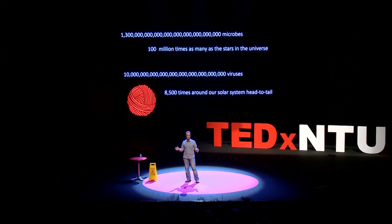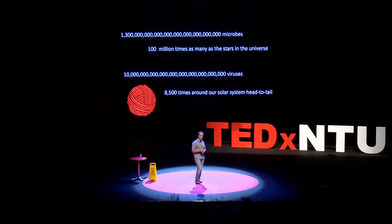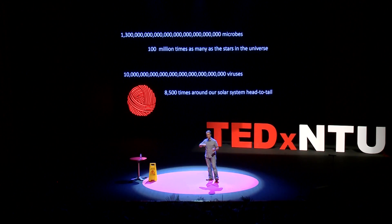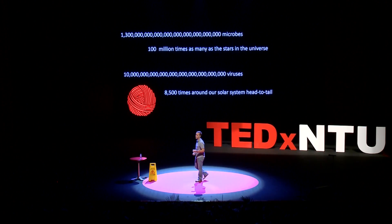And the smaller dots you saw in the picture before — those are viruses. There are about 10 to 100 times that number. And despite the fact that they're extremely small, if we were to string them head to tail into a tiny little string, we would have a string so long that we could wrap it around our solar system 8,500 times.